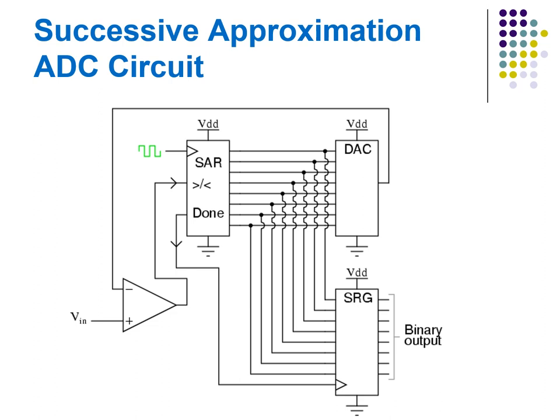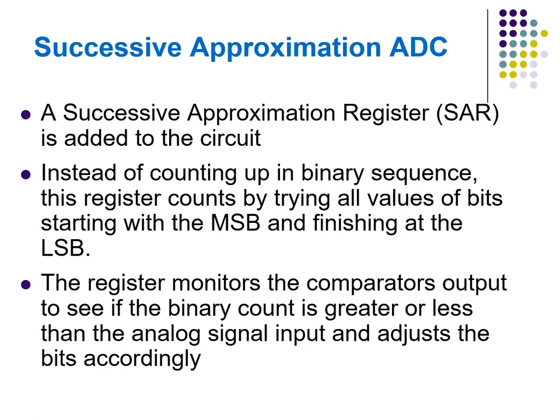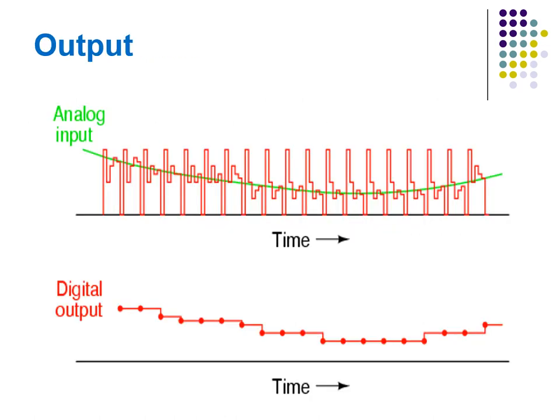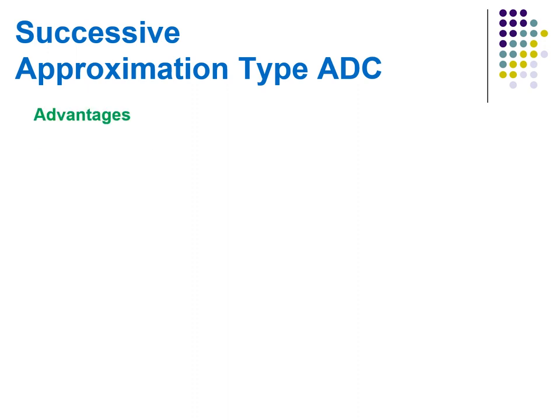In a successive approximation ADC, a successive approximation register is added to the circuit. Instead of counting up in binary sequence, this register counts by trying all values of bits starting with the MSB and ending with the LSB. The register monitors the comparator output to see if the binary count is greater or less than the analog signal input and adjusts the bit accordingly.